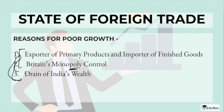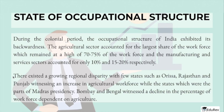Next is the state of occupational structure. During the colonial period, the occupational structure of India exhibited its backwardness. The agriculture sector accounted for the largest share of the workforce, remaining at a high of 70–75%, while the manufacturing and service sectors accounted for only 10% and 15–20% respectively. There existed a growing regional disparity, with states such as Odisha, Rajasthan, and Punjab witnessing an increase in agricultural workforce, while states that were parts of the Madras Presidency, Bombay, and Bengal witnessed a decline in the percentage of workforce dependent on agriculture.